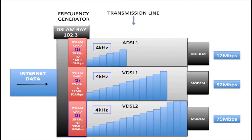This is Trevor from Telecom Training, and in this video we're going to be talking about the relationship between frequency, bandwidth, and speed within a transmission line. Here we have our internet data being fed into a DSLAM bay. DSLAM stands for Digital Subscriber Line Access Multiplexer. Within a DSLAM bay we have DSLAM cards, and each DSLAM card is connected to a line which is connected to an individual customer's modem. We have three different types of lines: an ADSL1, a VDSL1, and a VDSL2.